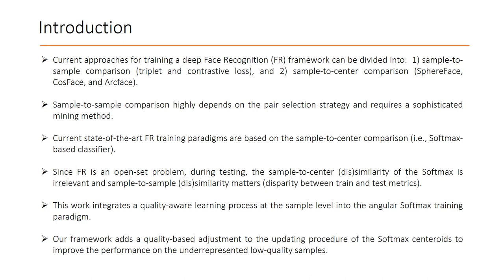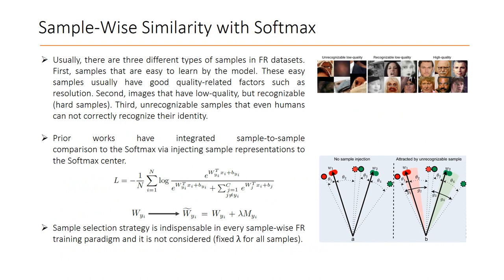One major problem with using these types of loss functions is the disparity between training and testing metrics. This work integrates a quality-aware learning process at the sample level into the angular softmax training paradigm. To this end, we adjust the updating procedure of the softmax centroids to improve performance on underrepresented low-quality samples.